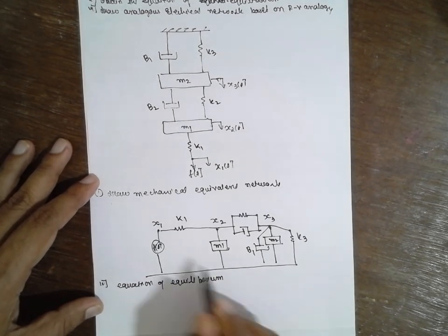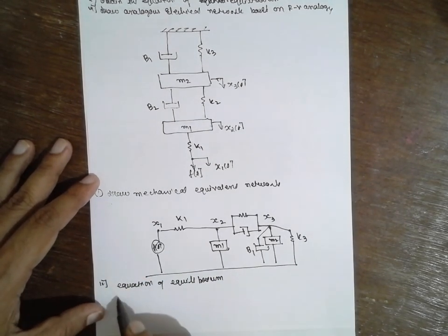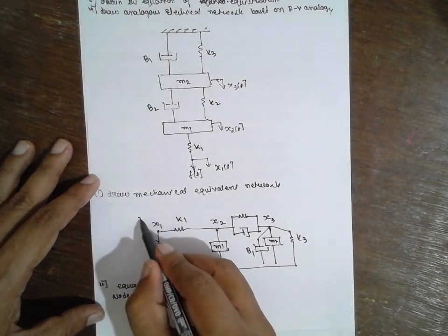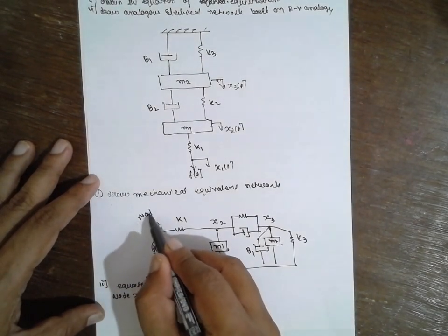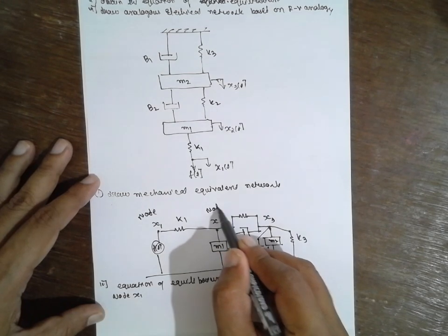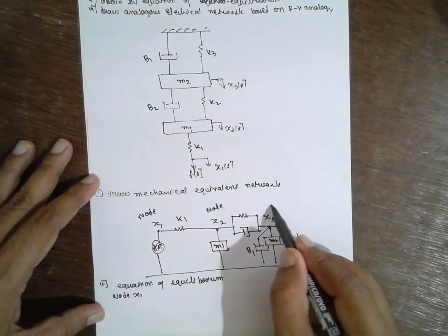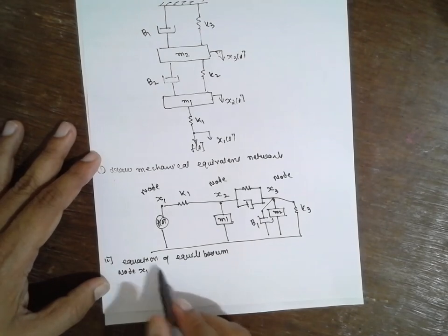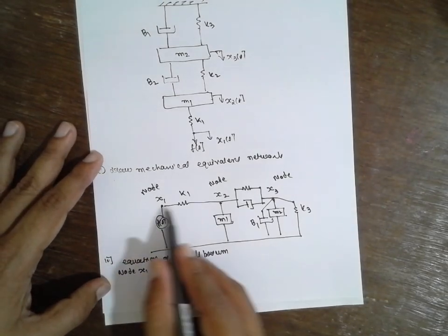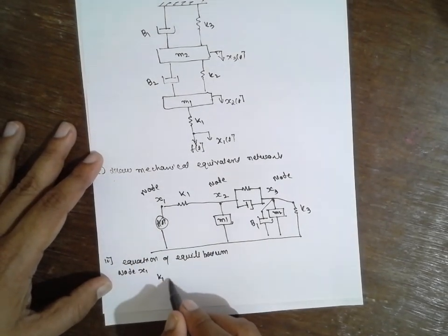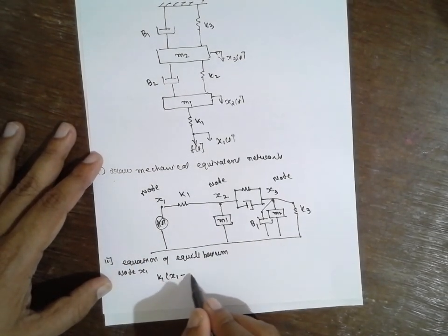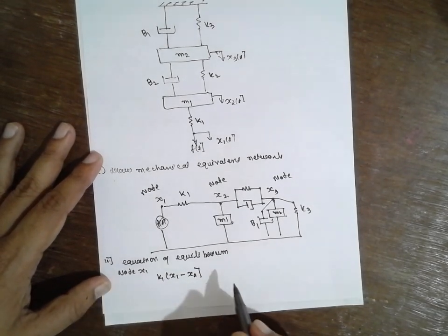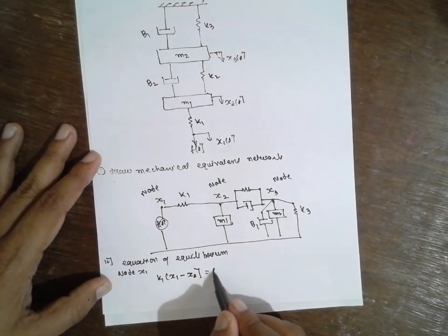I will consider node 1, node x1. The nodes are x1, x2, and x3. For node x1: K1 times (x1 minus x2) is equal to F(t).